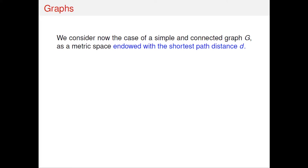Now we have a graph: a set of points — finite or infinite — where two points can be related or not. If they are related, they are called neighbors; between two neighbors you draw an edge. The distance on this graph is the shortest-path distance: you go from one point to a neighboring point, neighbor by neighbor, and count the number of edges. Among all possible paths, you choose the one with the minimum number of edges. That is the graph distance, the standard metric on G.